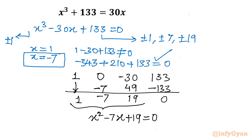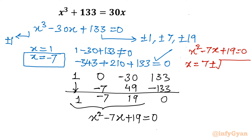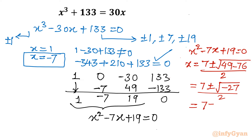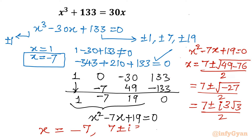Let's solve the quadratic equation x squared minus 7x plus 19 equal to 0 using the quadratic formula. x equals minus b, which is 7, plus or minus square root of b squared minus 4ac: 49 minus 76 is negative 27, divided by 2a, which is 2. So we get 7 plus or minus i times 3 root 3, over 2. The three solutions of this cubic equation are: minus 7, and 7 plus or minus i times 3 root 3, divided by 2.